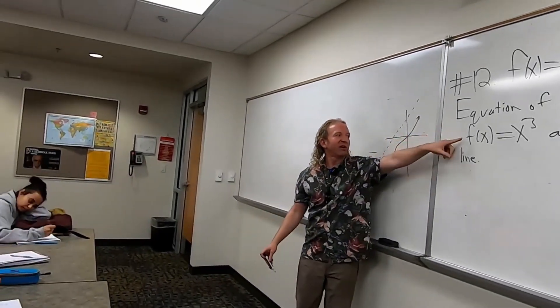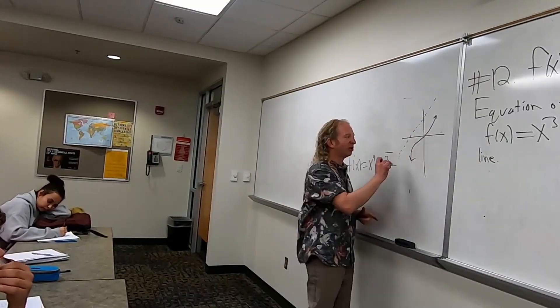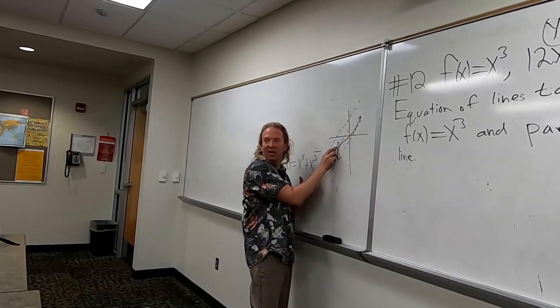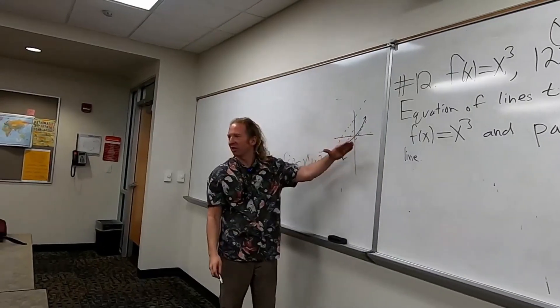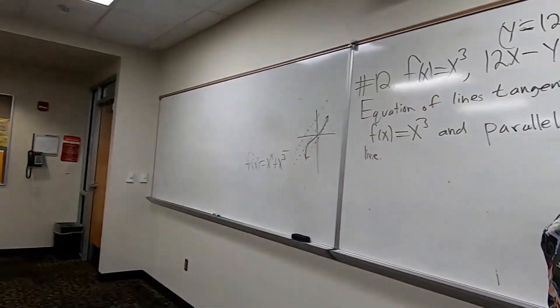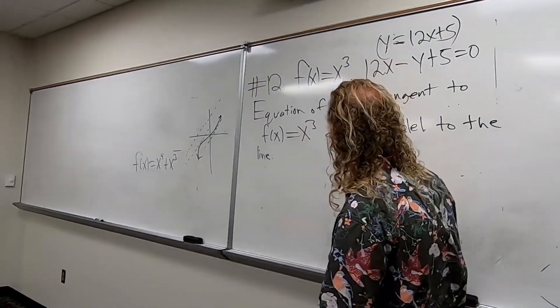And then, so you want the equations of the line that are tangent to this and parallel to this. So they're going to look something like this. All right, these will be the answers, right? Because they're parallel to this line. You don't have to draw the picture, though. You can just do it without the picture. So you need the lines that are tangent to this and parallel to this. So solution.